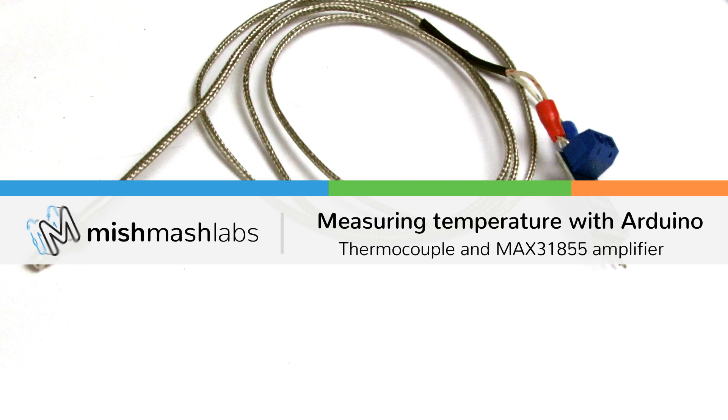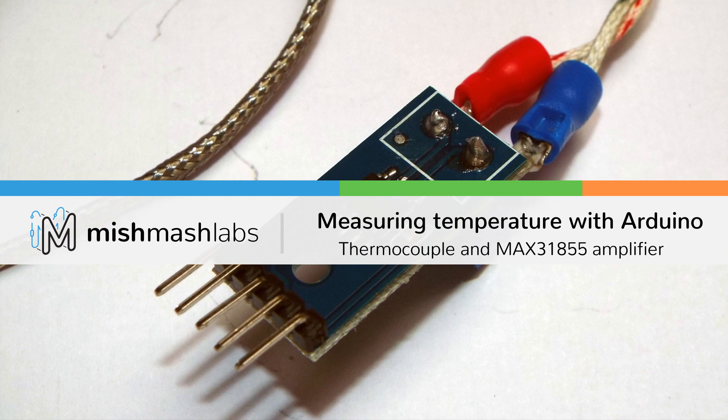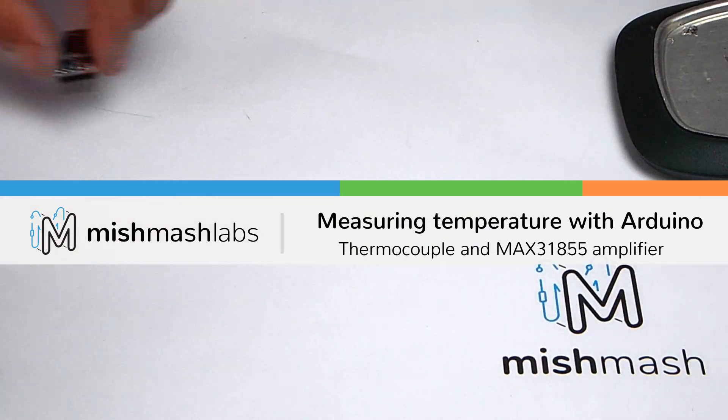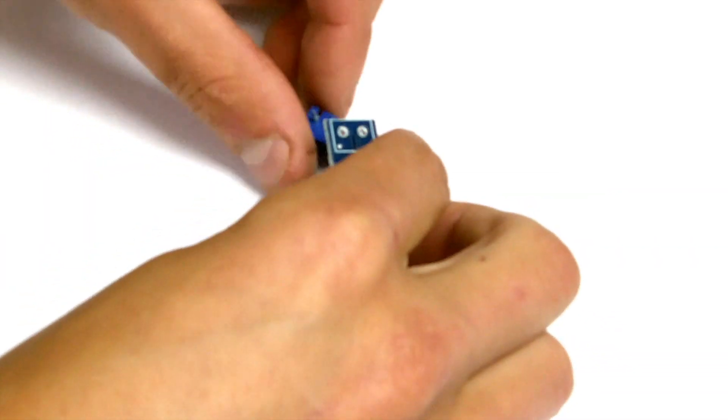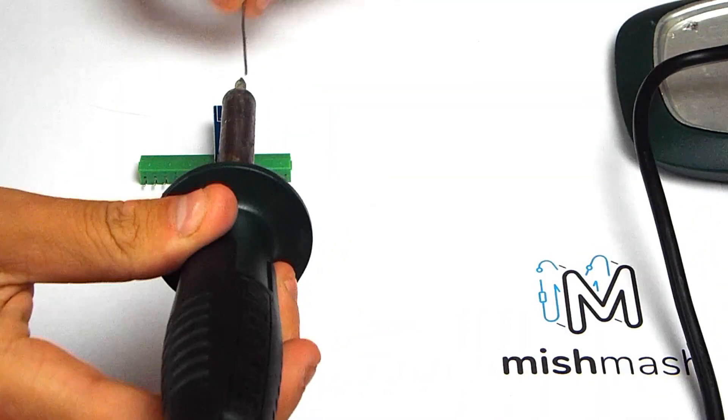Today we're working on the MAX 31855k thermocouple amplifier breakout board. This comes with a thermocouple and we're going to be wiring it to an Arduino Nano replica.